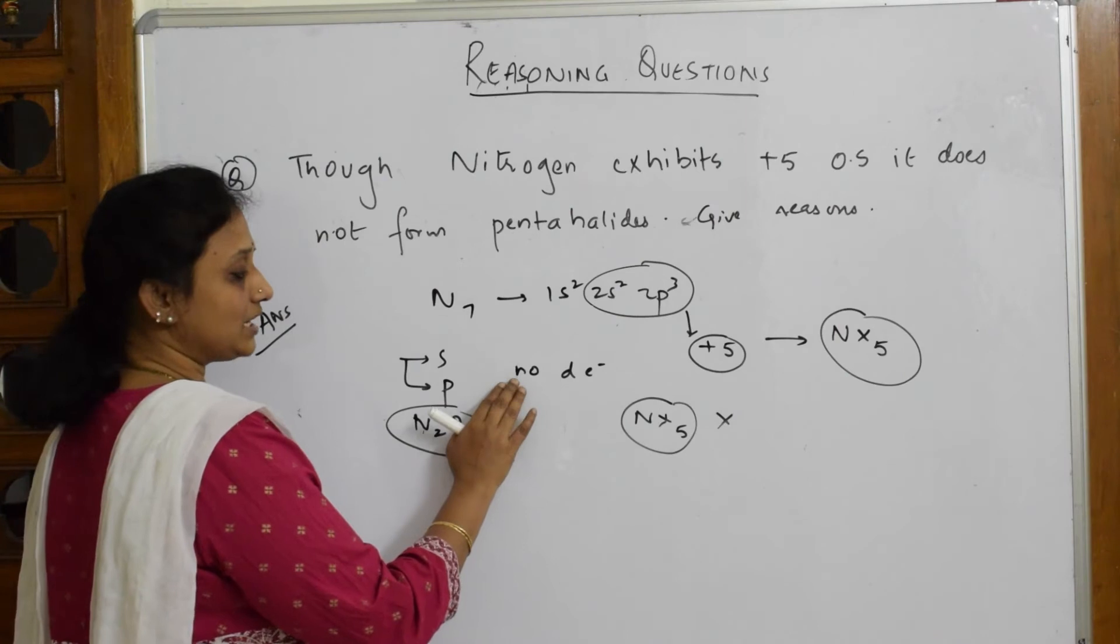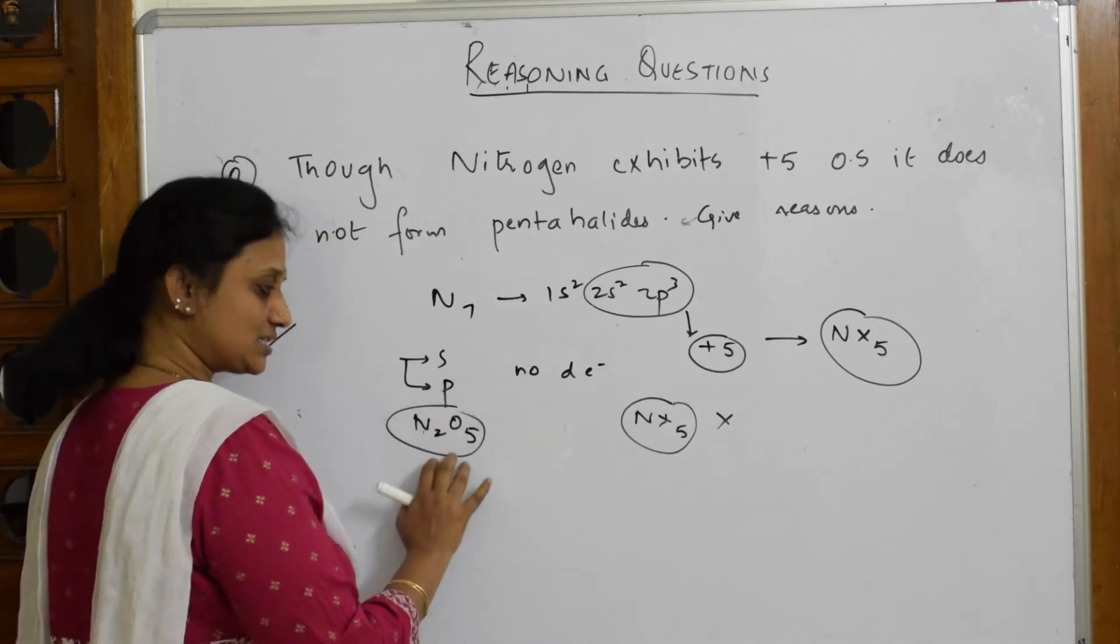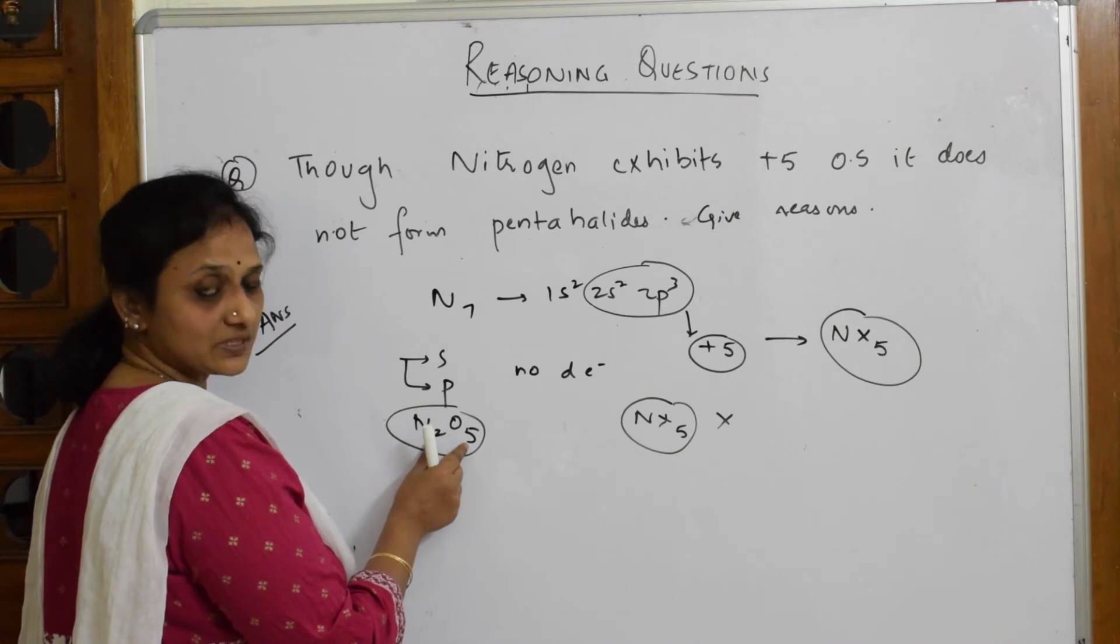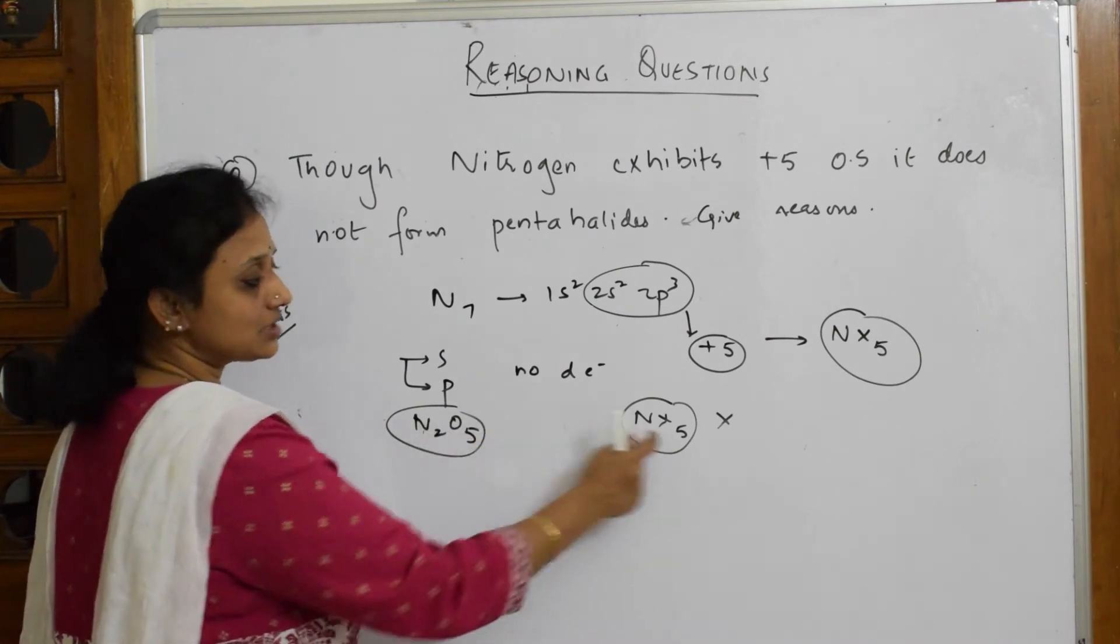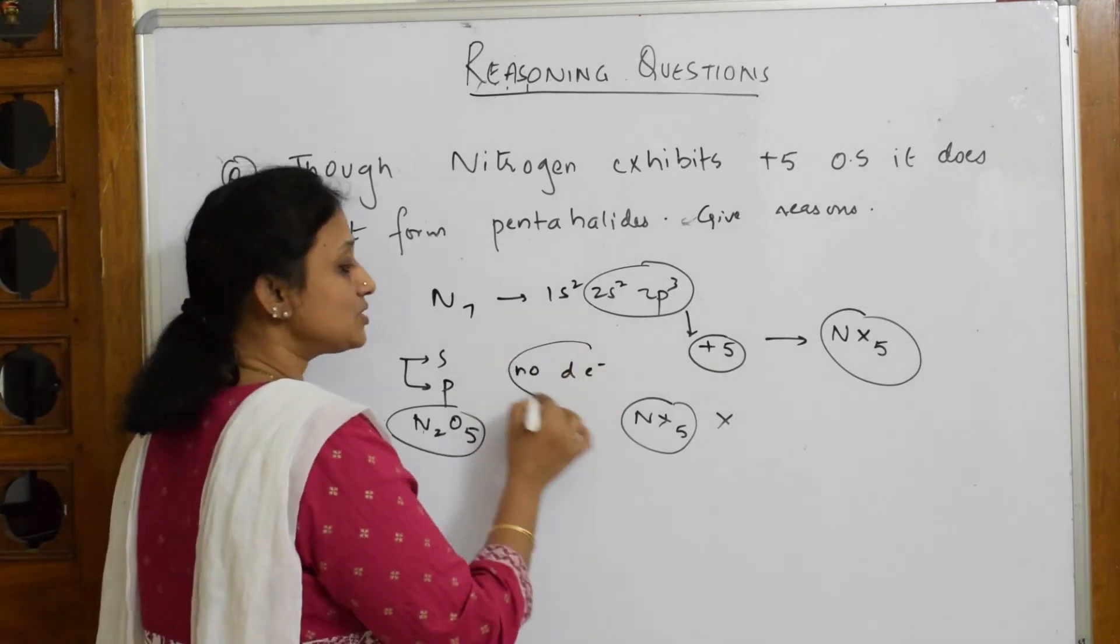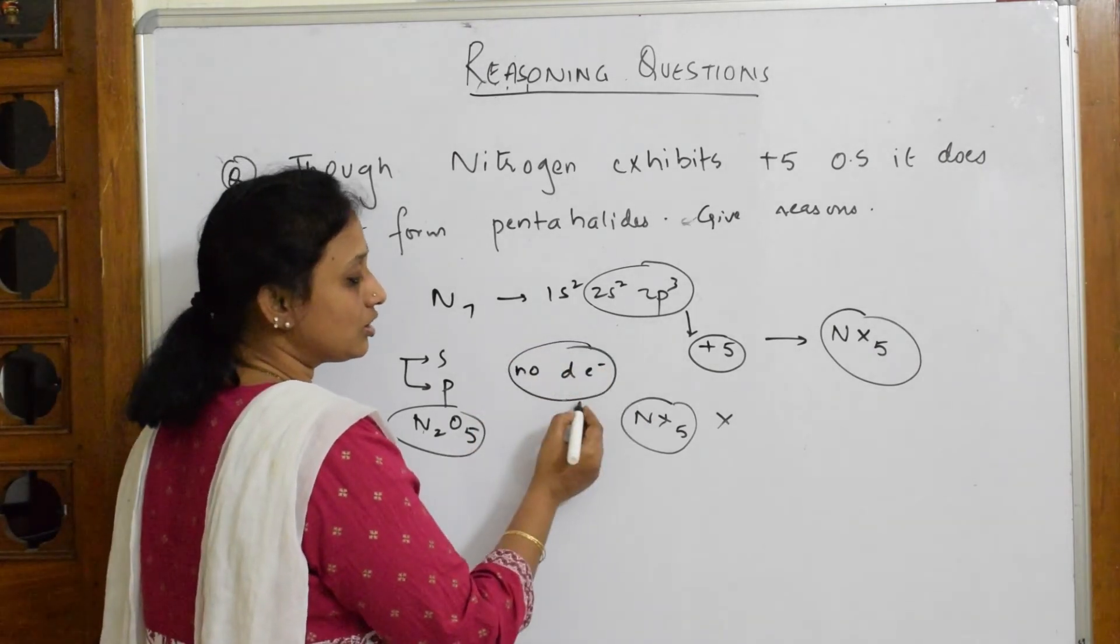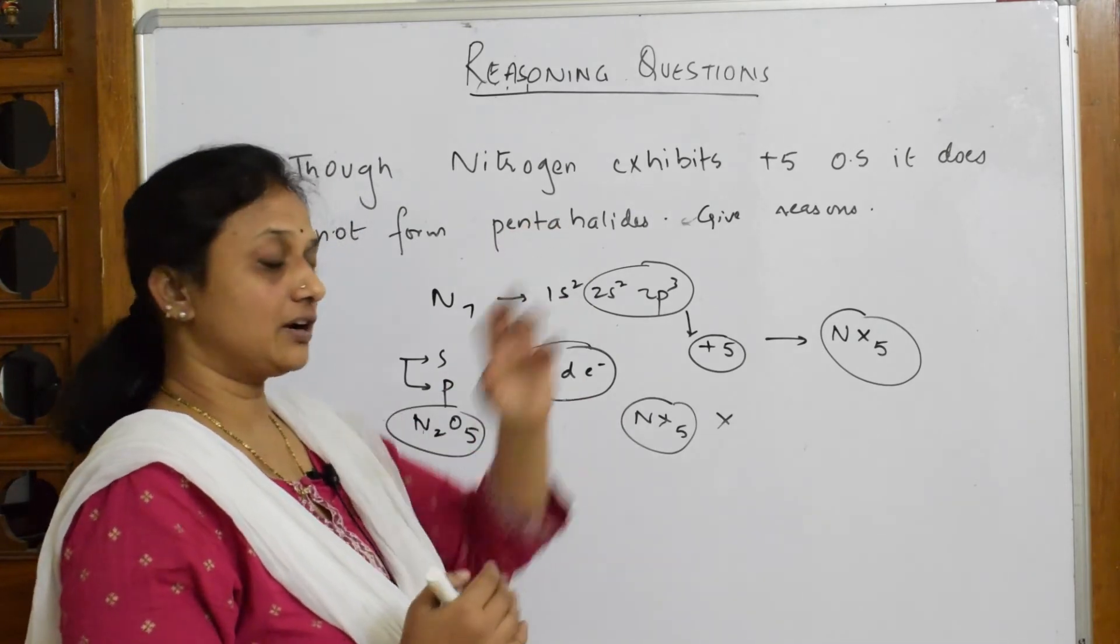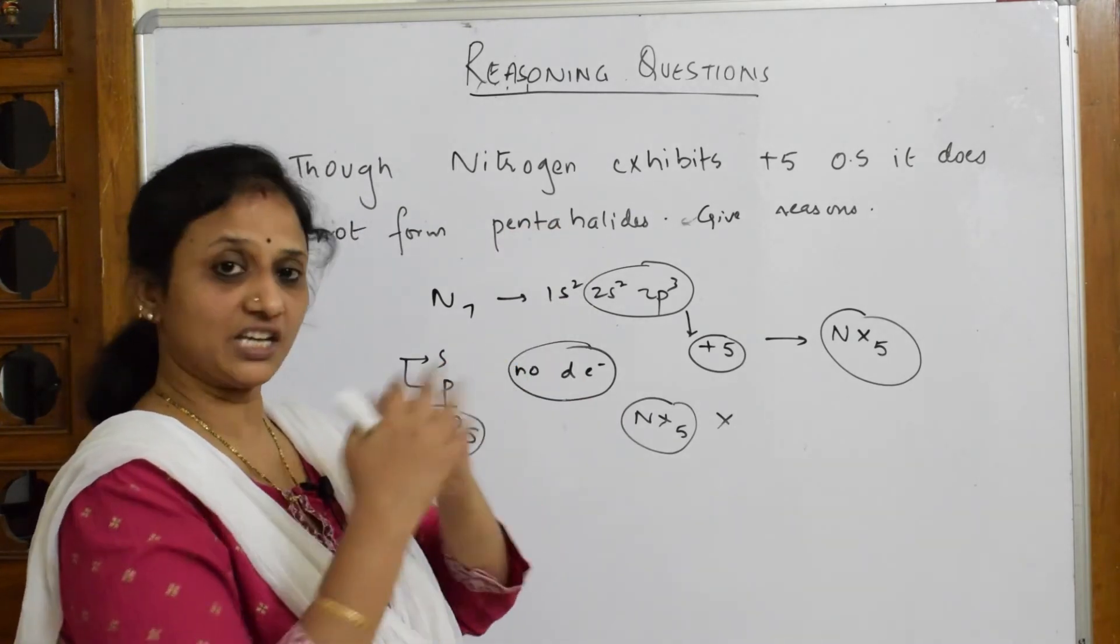This forms N₂O₅ because it is dimerizing, but here it's not going to form NX₅. Why? Absence of d orbitals. There are no d orbitals, hence it can't extend its valency. It can't share those electrons because this is absent - only s and p.